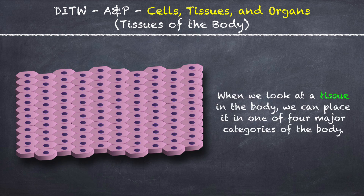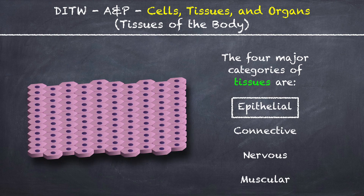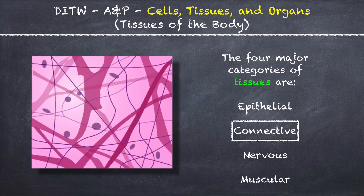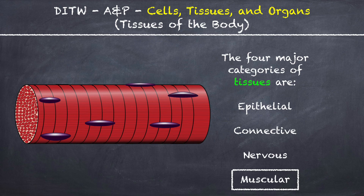When we look at a tissue in the body, we can place it in one of four major categories. The four major categories of tissues are Epithelial Tissue, Connective Tissue, Nervous Tissue, and Muscular Tissue.